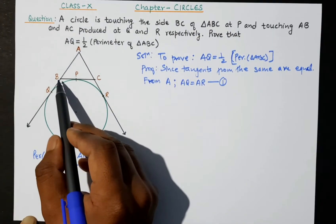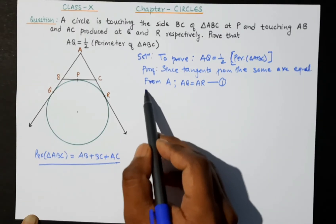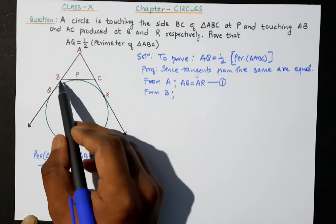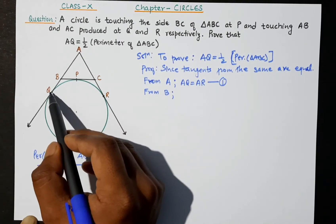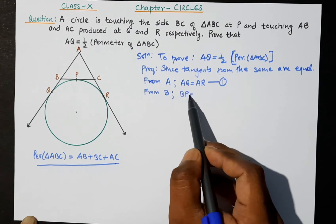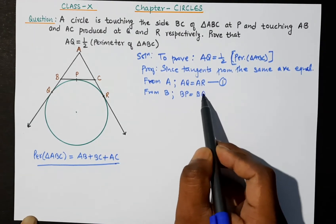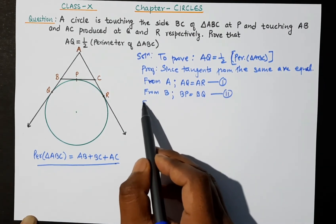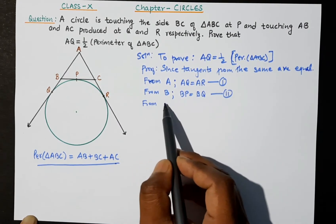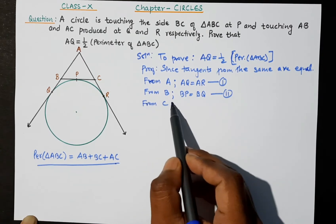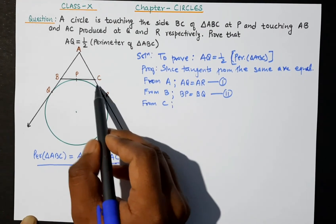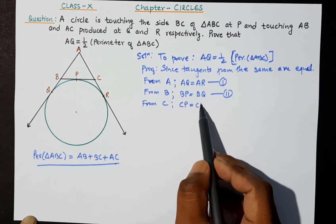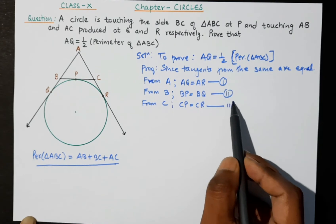From point B, we have tangents BP and BQ, so BP equals BQ — this is equation 2. From point C, we have tangents CP and CR, so CP equals CR — this is equation 3.